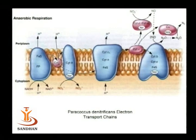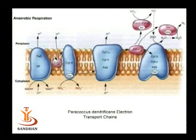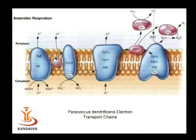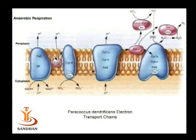The electron transport chain of Paracoccus denitrificans is highly branched, and at each step, different coenzymes and complexes are involved. The first acceptor is NO₃⁻, which is converted to NO₂⁻ by acceptance of two electrons. Generally organisms perform denitrification — nitrate is converted to molecular nitrogen by the corresponding enzymes — and five electrons are taken up by nitrate to ultimately produce nitrogen gas.